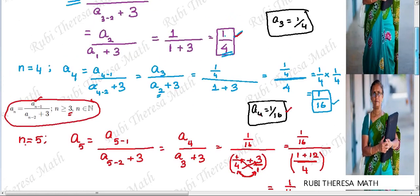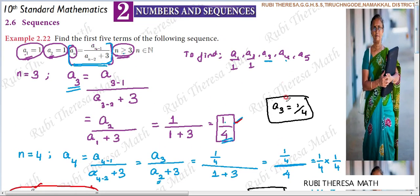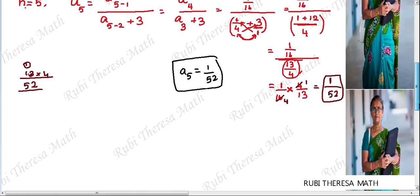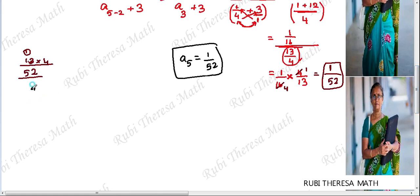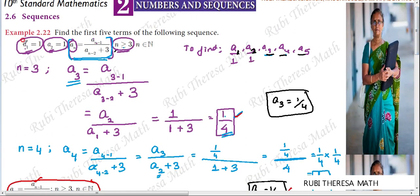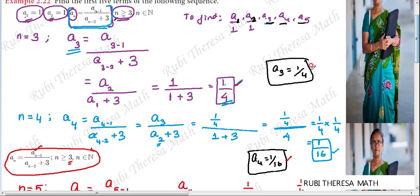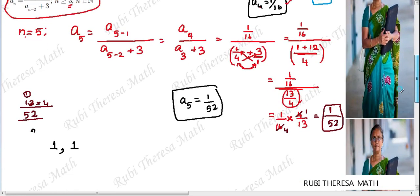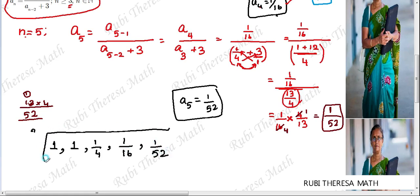We have now found the first 5 terms of the sequence. The 1st and 2nd terms were already given: a1 equals 1 and a2 equals 1. We computed the 3rd, 4th, and 5th terms: a3 equals 1 by 4, a4 equals 1 by 16, and a5 equals 1 by 52. These are the first 5 terms of the sequence.